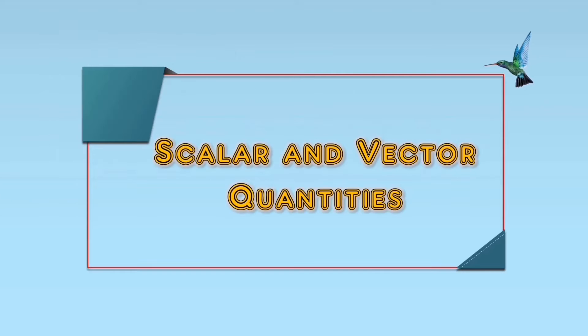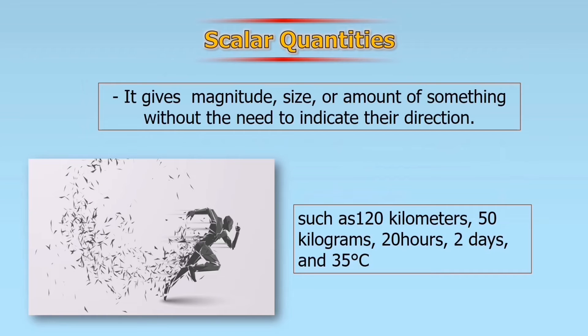Let us differentiate the scalar quantities and vector quantities. When we say scalar quantities, it gives magnitude, size, or amount of something without the need to indicate their direction. For example, such as 120 kilometers, 50 kilograms, 20 hours, 2 days, and 35 degrees Celsius. In scalar quantities, always remember that it only indicates the magnitude or the size or the amount of something without direction.